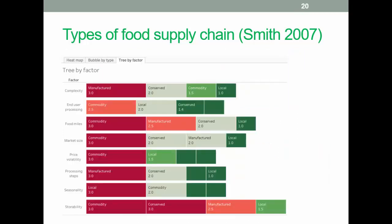I've created an interactive visualization based on Smith's paper so you can explore the different types of commodity, food miles, market sizes, seasonality, and other variables. We might look at this during the semester, but it's there if you want to explore it beforehand.